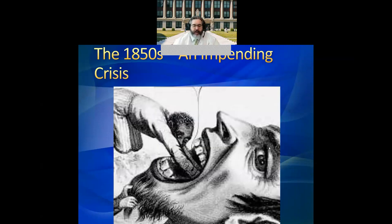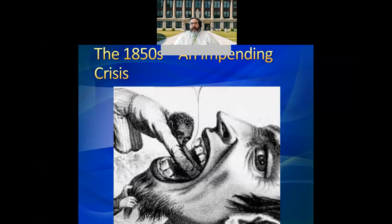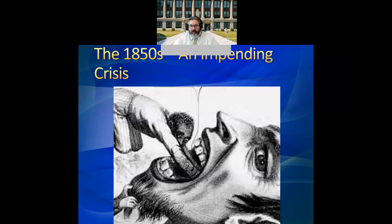Hi, this is Professor Cahan Lust with another lecture in History 1301, United States History 2, 1877. Today we're going to be on Lecture 17, The Impending Crisis. We are really in the homestretch. These next three lectures are it for the remainder of the semester, and I think these last three lectures are the most important of the lectures.